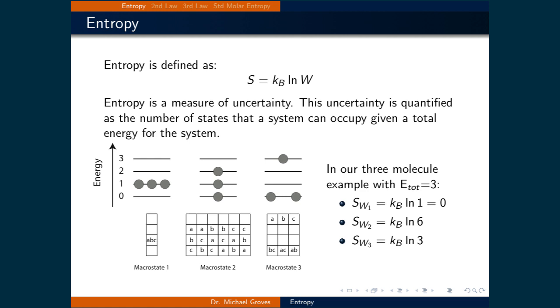This means that the second macrostate for this system has the highest entropy. It follows that it is the most uncertain, since it has the most microstates. On the other hand, there is no uncertainty for macrostate one, since there is only one microstate.